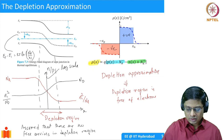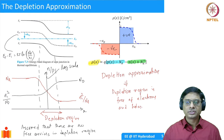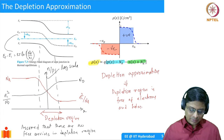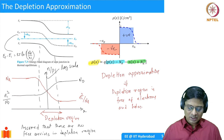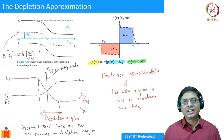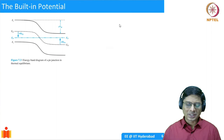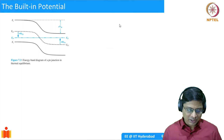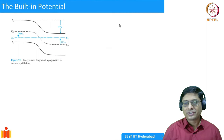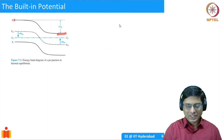This approximation is not always exactly true, but the answers it gives are close enough. We will see a short demo in the next lecture confirming this. Now let's find a more convenient expression for the built-in potential. The built-in potential is the difference in Ec between the p-type and n-type regions: Vbi equals Ec(p) minus Ec(n).